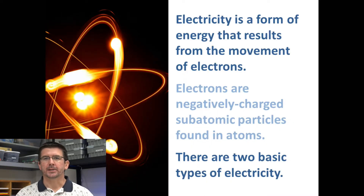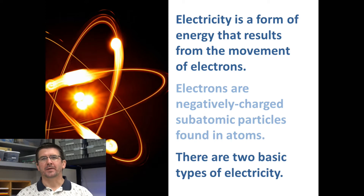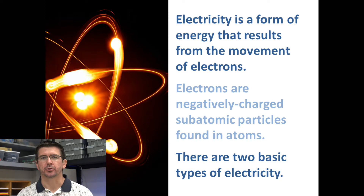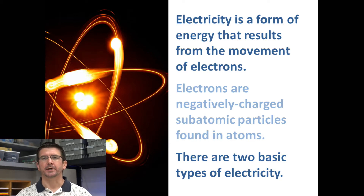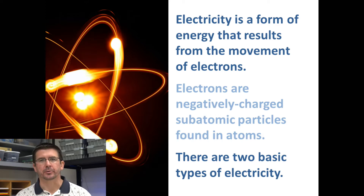To begin this lesson I want to talk first about electricity in general and what it is. We've talked about the different parts that make up atoms: the protons which have a positive charge, the neutrons which have no charge, and those particles called electrons that orbit the nucleus of the atom and have a negative charge. Electricity occurs as a result of these negatively charged electrons.